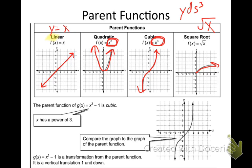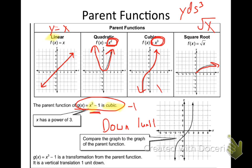We're going to identify functions. If I look at G(x)=x³-1, knowing it's x³ tells me right away this is a cubic function. The minus 1 tells me I'm going to go down one unit — so we just shifted the graph down one unit, and it's the same exact graph.